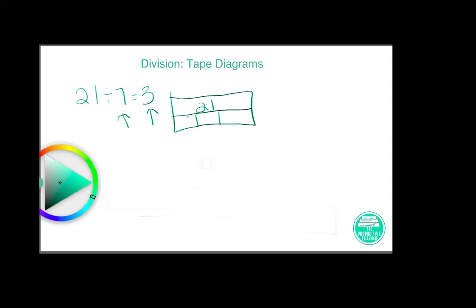And then 7 would be the number that goes in each box. So this is a model showing 21 divided into groups of 7 equals 3 groups.